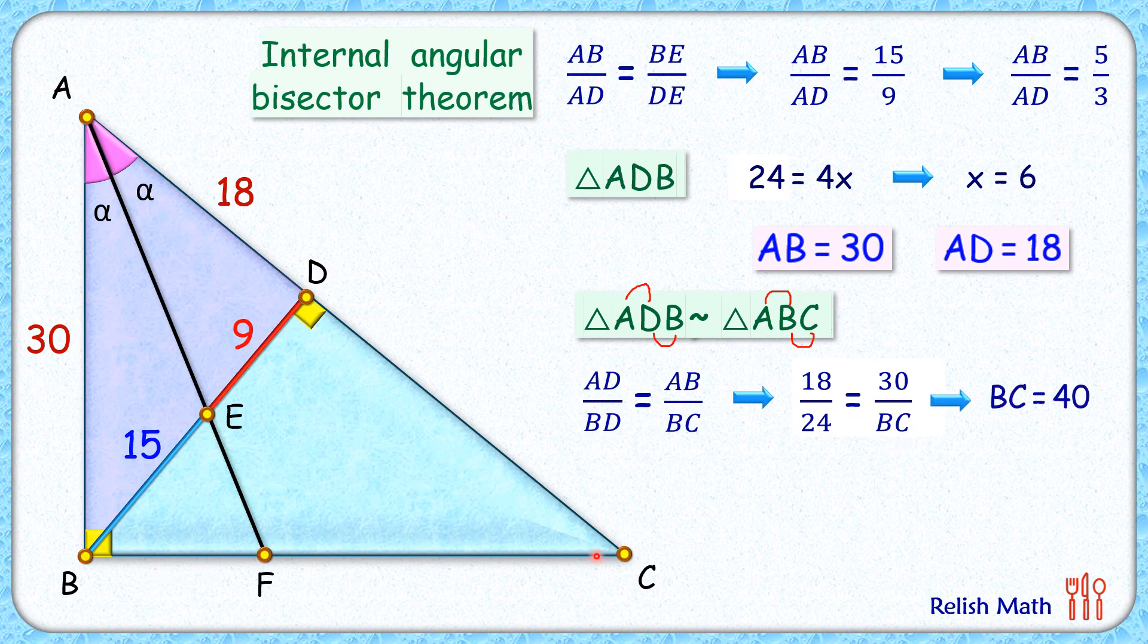So this length is 40 centimeters. Now the area of triangle ABC is half of base into height, or half of 30 times 40, that is 600 centimeter square. And that's our answer. I hope you enjoyed the solution. I'll see you in the next video. Till then, tata bye bye.